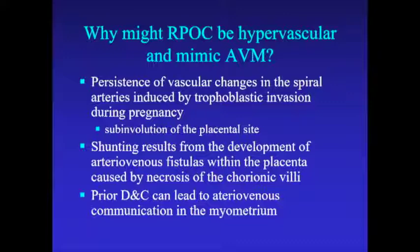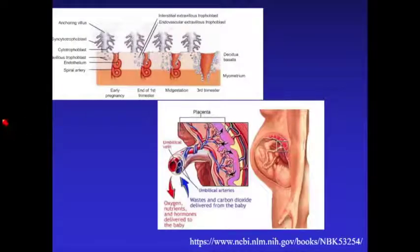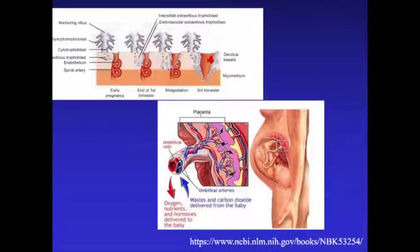Why might retained products be hypervascular and mimic an AVM? It's because of the persistence of vascular changes in the spiral arteries induced by trophoblastic invasion during pregnancy. You also get shunting from AV fistulas within the placenta caused by necrosis of chorionic villi. Prior D&C can actually lead to AV communications in the myometrium as well.